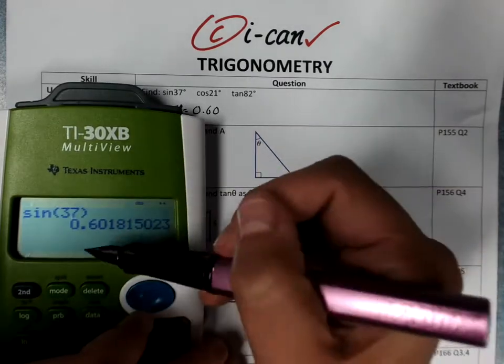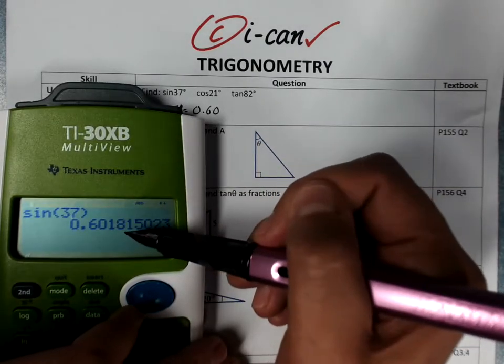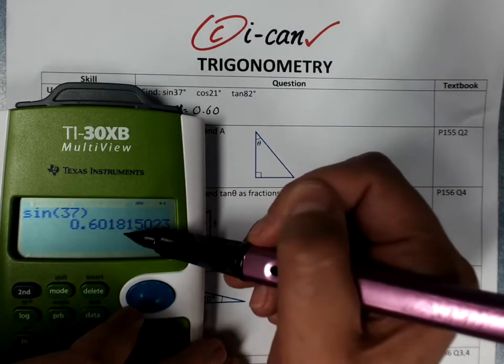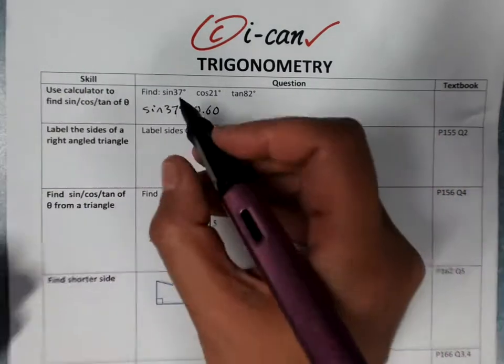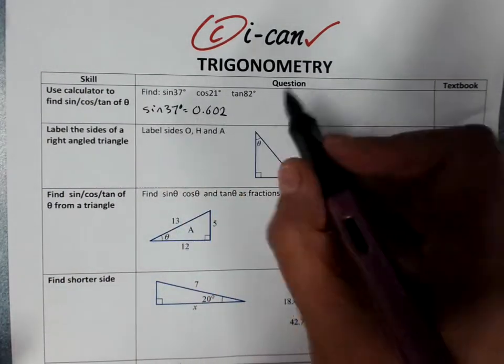It'll usually say to round to a certain number of decimal places. I'll go to three decimal places. 0.601. Look at the first one I've cut off. That's five or more, so I'll add one here. 0.602.